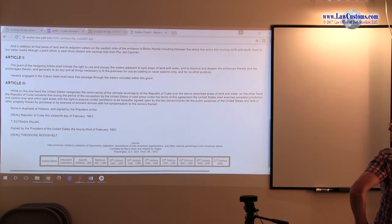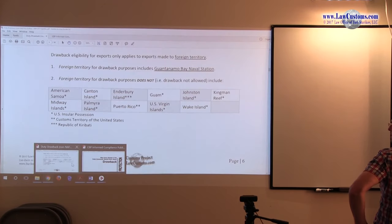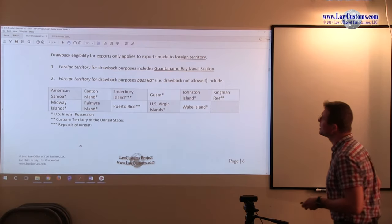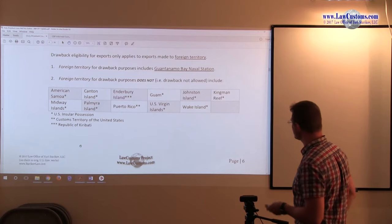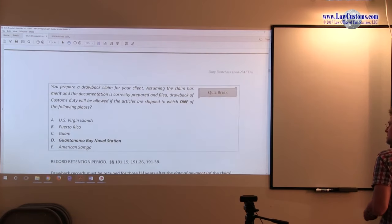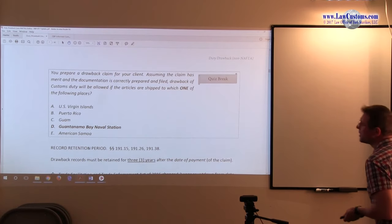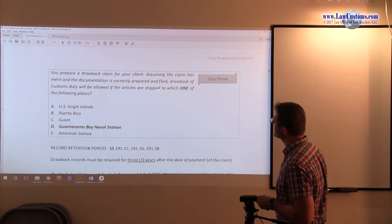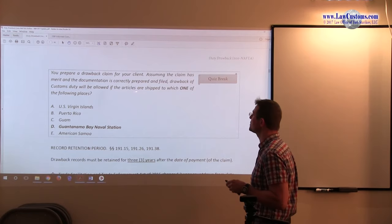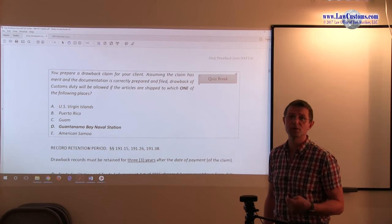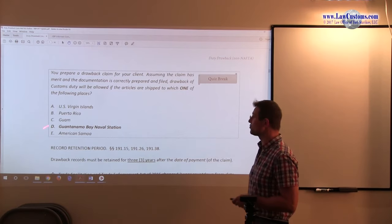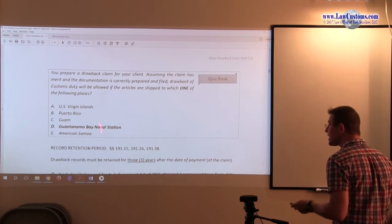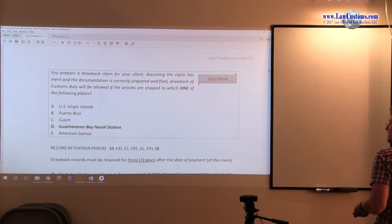Irrespective of that, although this is a customs broker exam class, we have to know the history because Guantanamo Bay Naval Station is considered to be foreign territory, and it has been tested on the exam in such manner. You prepare a drawback claim for your client. Assuming the claim has merit and documentation is correctly prepared and filed, drawback of customs duty will be allowed if the articles have shipped to which one of the following places. Guantanamo Bay fits the bill. All the other ones are the possessions of the United States too.